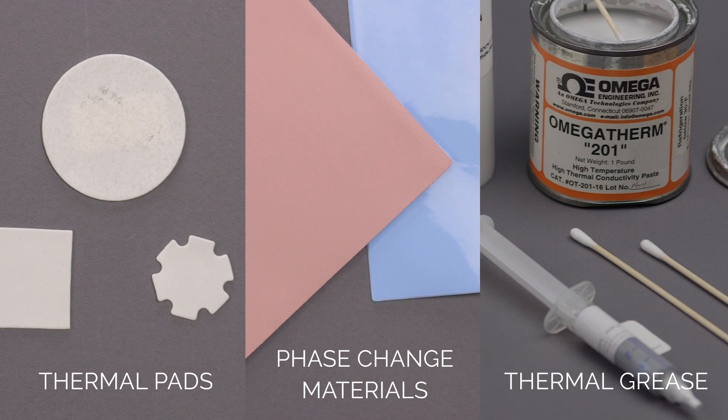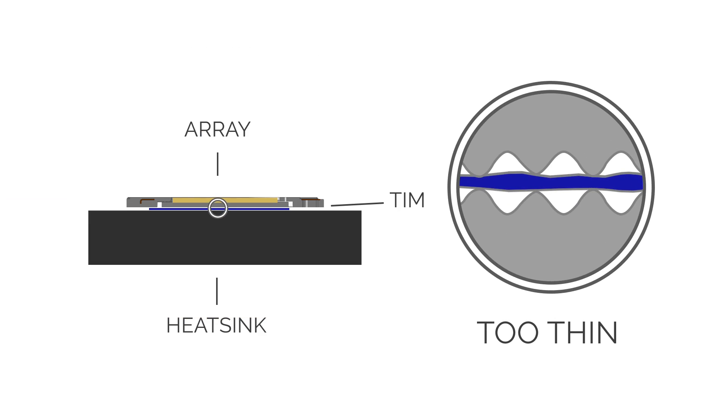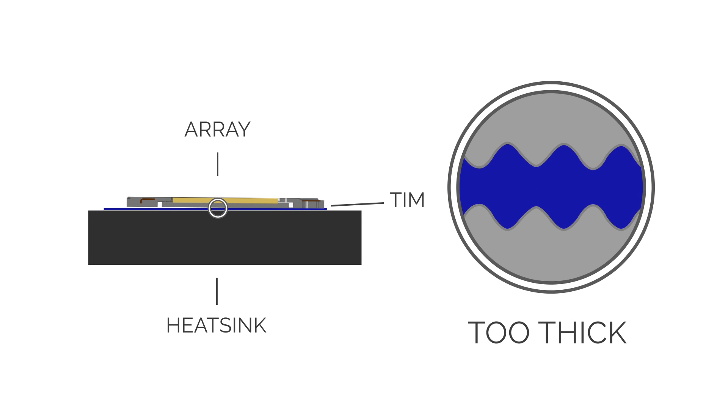TIMs are manufactured to a variety of thickness specifications. The selection of a TIM that is too thin can lead to inadequate contact between the two surfaces. In contrast, a TIM that is too thick can create warpage in the array substrate during mounting.